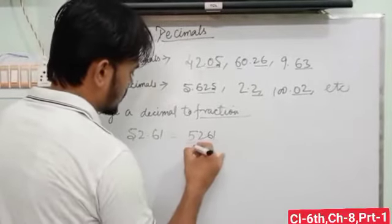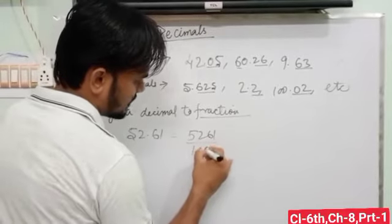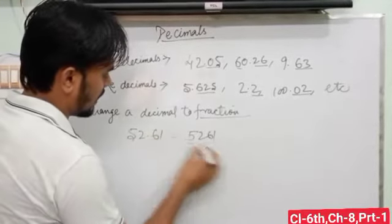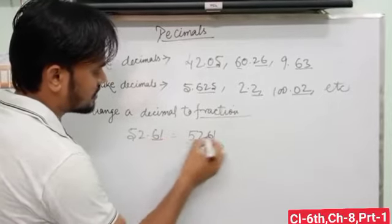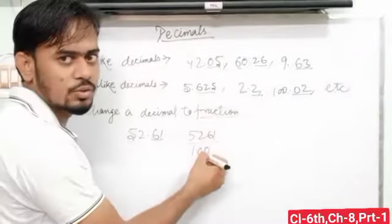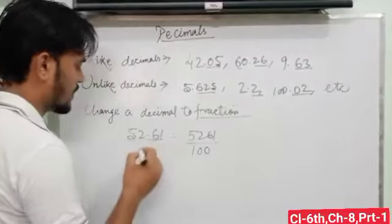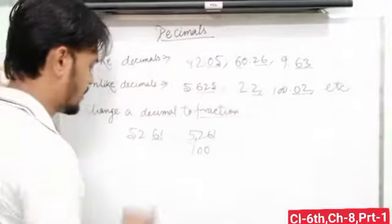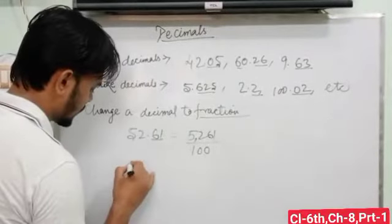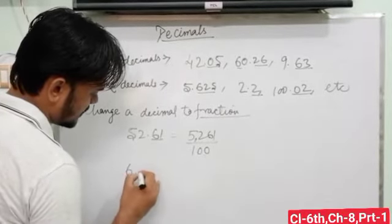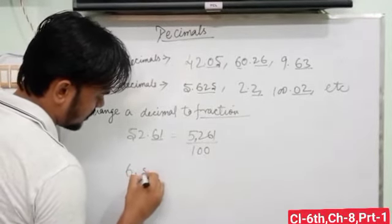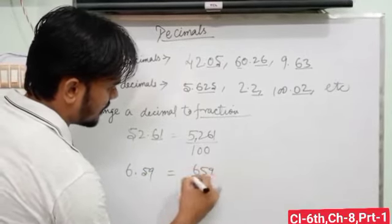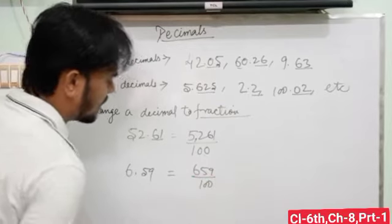Then 1, and there are two digits after the decimal, so write two zeros here. So this one is 5261 upon 100. See another: 6.59. Then the answer is 659 upon 100.